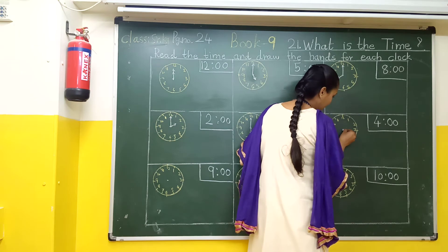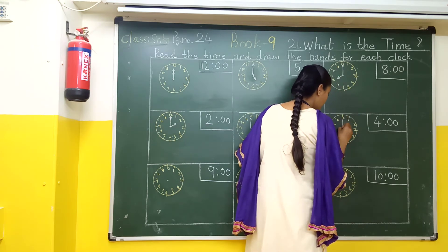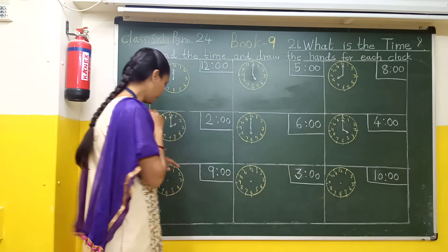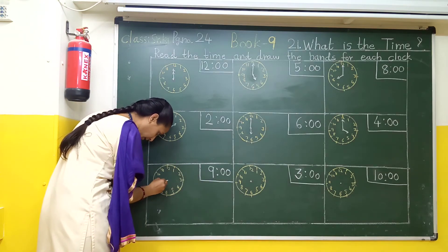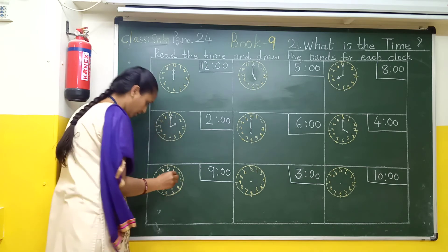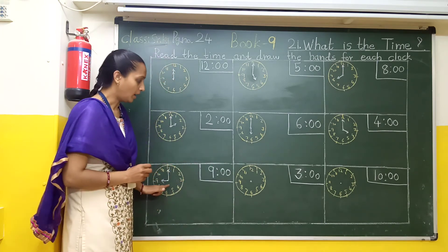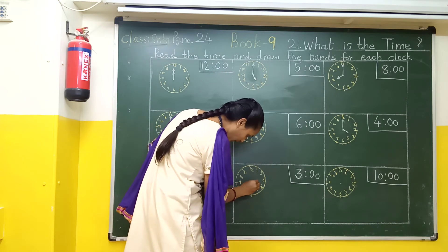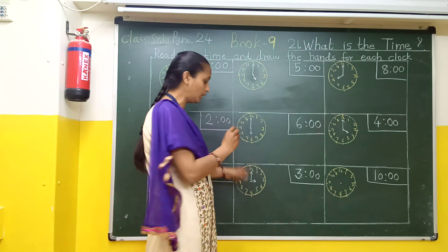So your hand is on 4, and the big hand is on 12. In this way we can draw 4 o'clock. Here we have to show 9 o'clock, so our hand will be on 9, and the big hand is on 12. This is 9 o'clock. After that here we have to draw 3 o'clock — the small hand is on 3 and the big hand is on 12. So this is 3 o'clock.